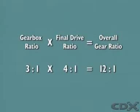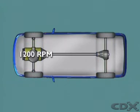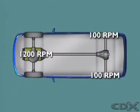A gearbox ratio of three to one with a final drive ratio of four to one gives an overall ratio of twelve to one. Twelve revolutions of the crankshaft result in one turn of the driving road wheels.